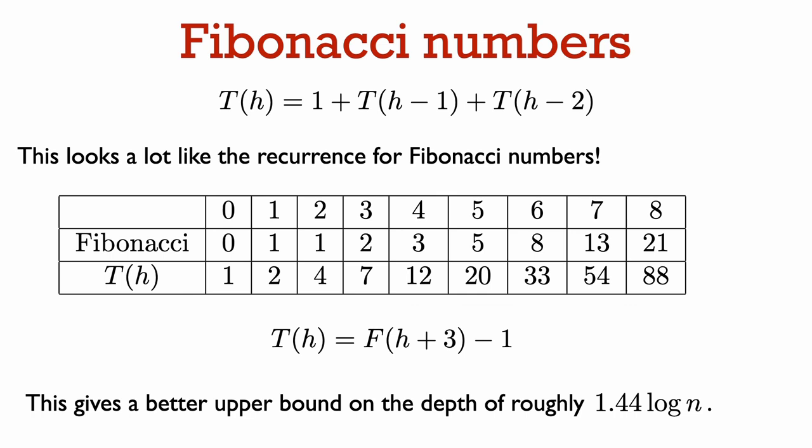We saw that the recurrence for T of h is very similar to that of the Fibonacci numbers. If we let F of h be the h-th Fibonacci number, we can actually express T of h in terms of F of h. I won't go through the details here, but you can actually show that T of h is exactly F of h plus 3 minus 1 — that is, the (h+3)-th Fibonacci number minus 1. Using the closed form expression for the Fibonacci numbers, you can use this to show a slightly better upper bound on the height of an AVL tree of roughly 1.44 times log n, rather than the bound of 2 times log n that we derived.